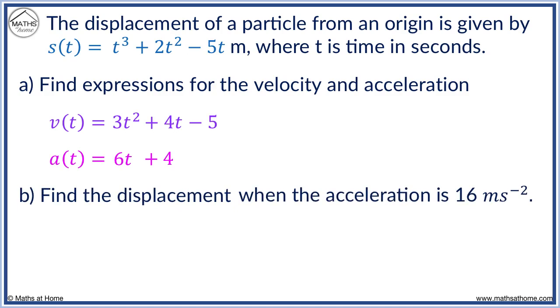We first find the time where acceleration equals 16. We take 6T plus 4 and set acceleration equal to 16. Solving for T, we subtract 4 to get 12 equals 6T, and divide by 6 to get T equals 2.